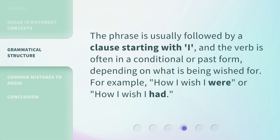The phrase is usually followed by a clause starting with 'I,' and the verb is often in a conditional or past form, depending on what is being wished for. For example: 'How I wish I were...' or 'How I wish I had...'